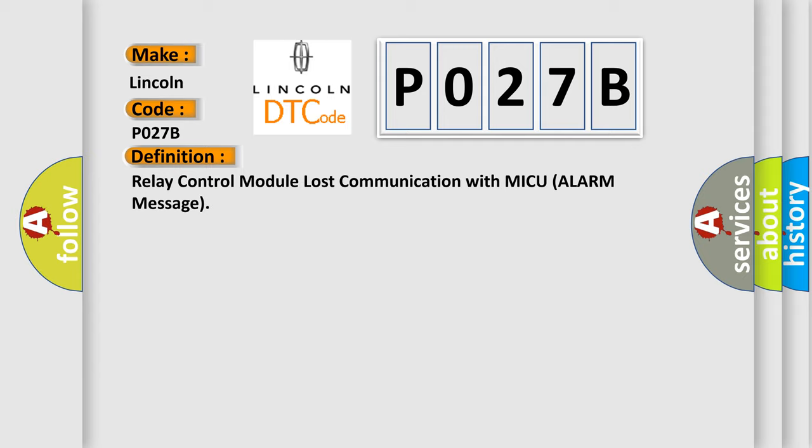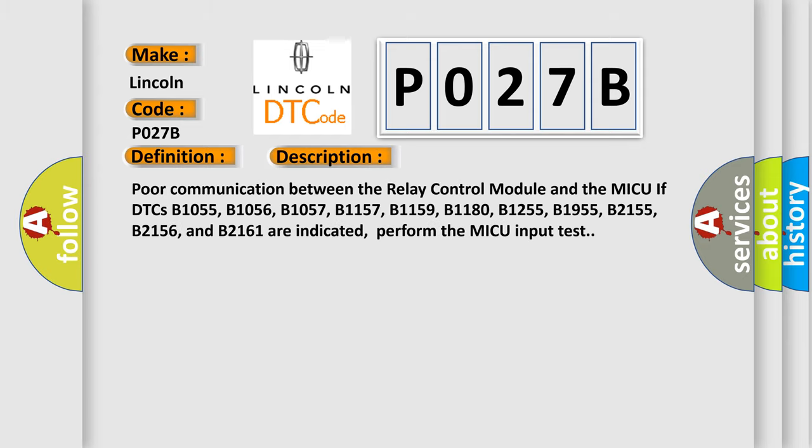Here is a short description of this DTC code. Poor communication between the relay control module and the MICU if DTCs B1055, B1056, B1057, B1157, B1159, B1180, B1255, B1955, B2155, B2156, and B2161 are indicated. Perform the MICU input test.